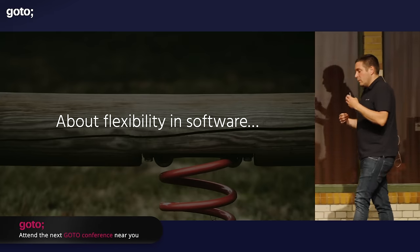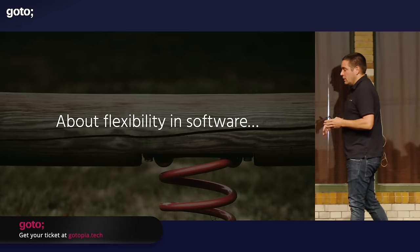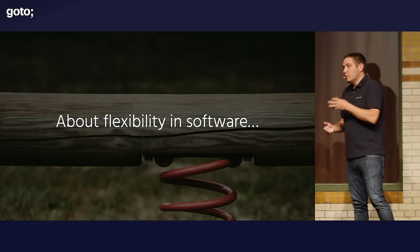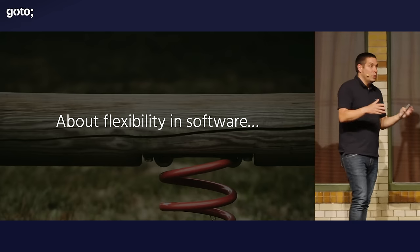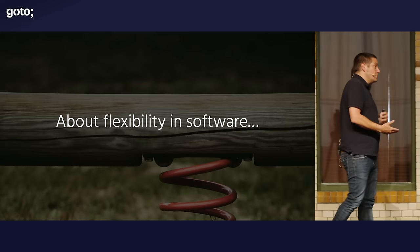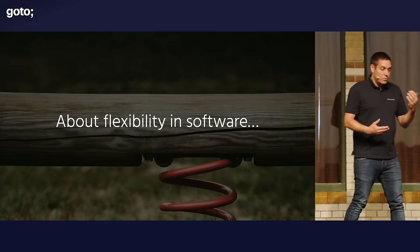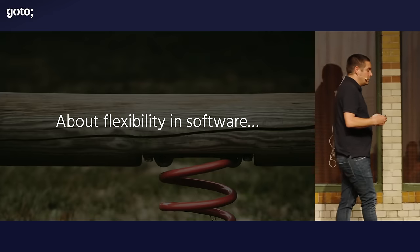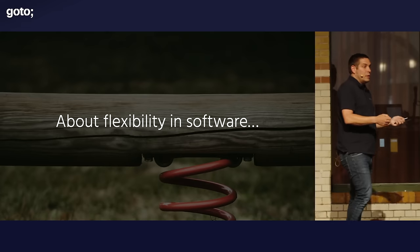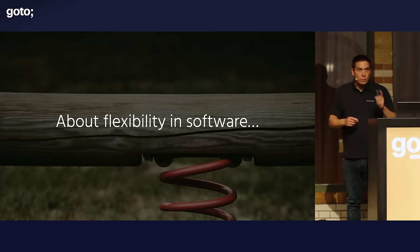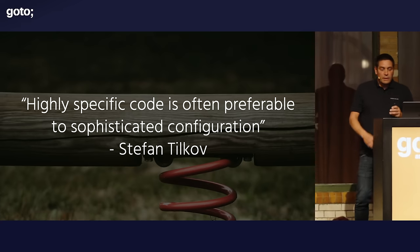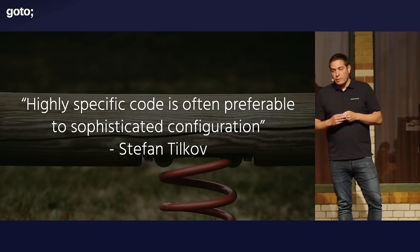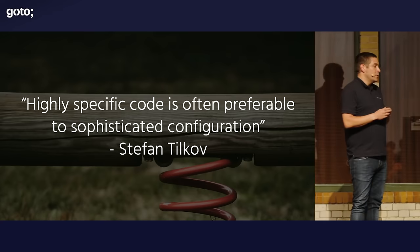It was a Java EE application with JPA and Hibernate and loads of @PostConstruct and @PostLoad annotations. Basically an entire Christmas tree was being fetched in memory because of all those things made 'easy to change.' It became an inverse self-fulfilling prophecy — because they wanted the system to be easy to change, they designed it to be so complex that it became hard to change. In the end, we convinced the client to rebuild something really simple that did exactly what the business wanted. We succeeded by writing simple code. Stefan Tilkov said it best: 'Highly specific code is often preferable to sophisticated configuration.'